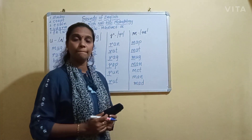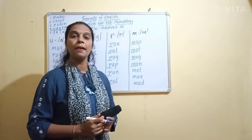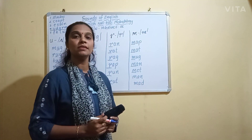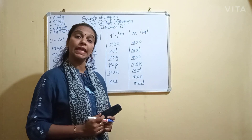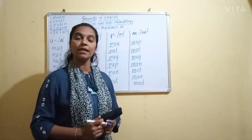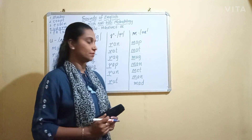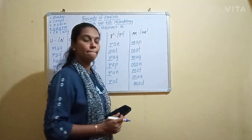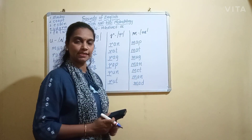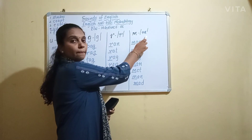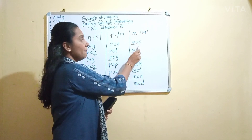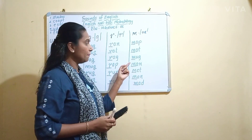Next letter M. Examples: mat, met. M says M — map, mat, mug.